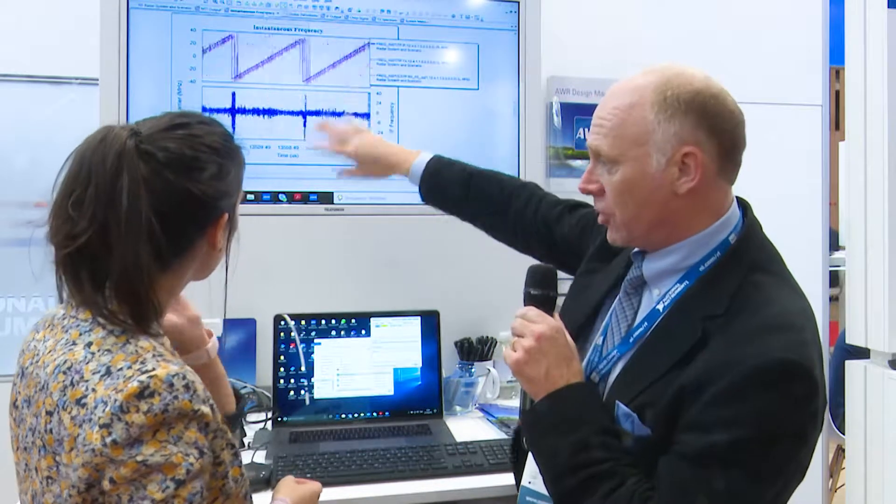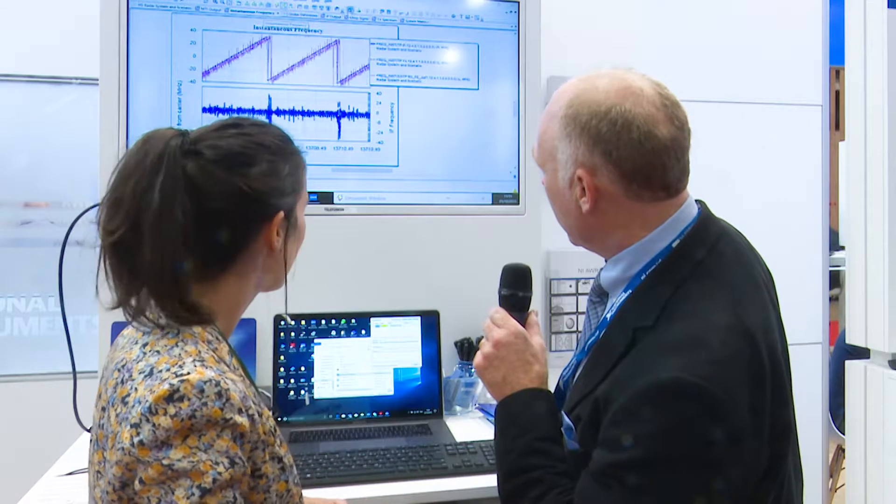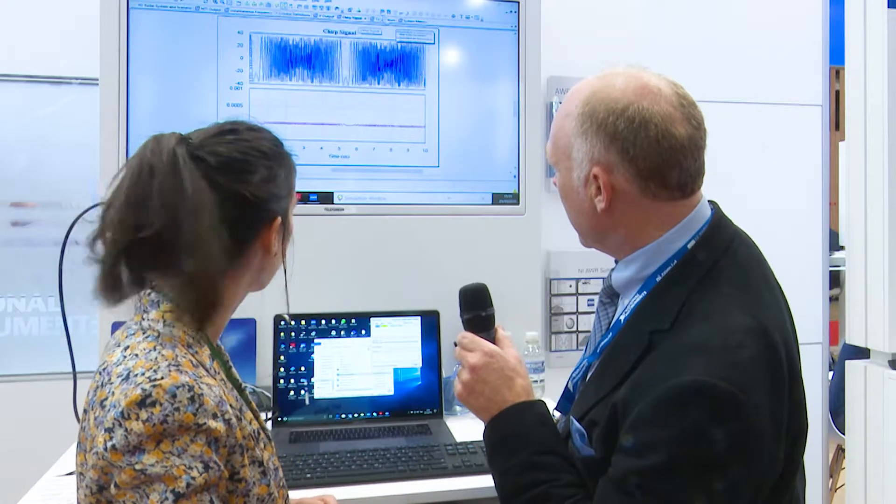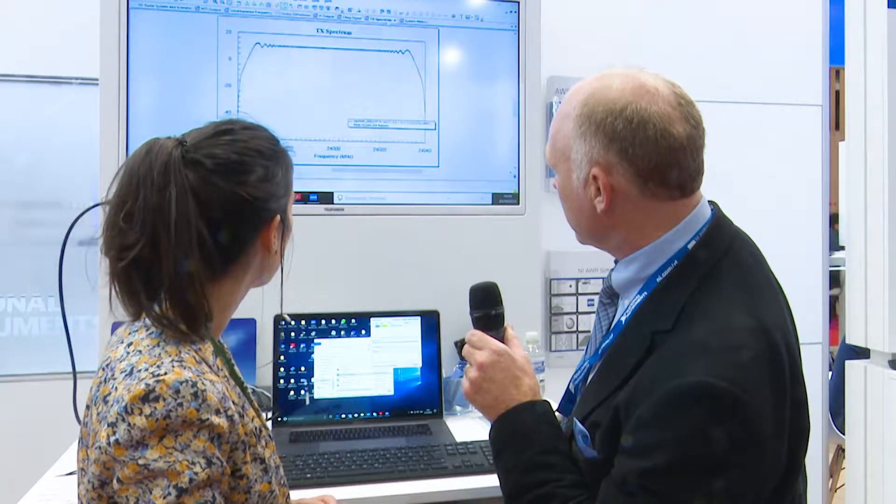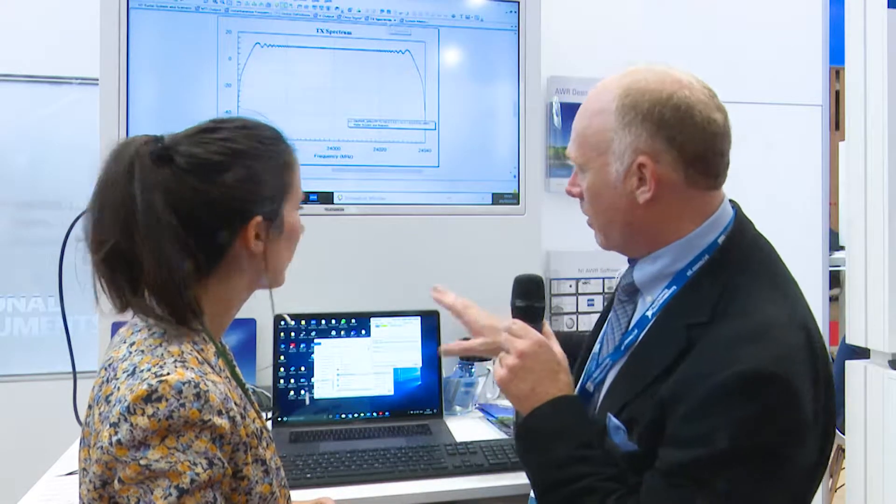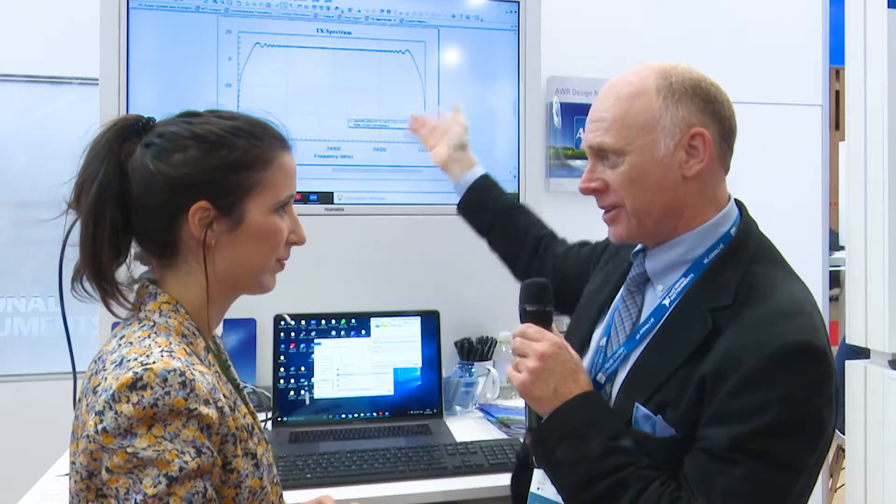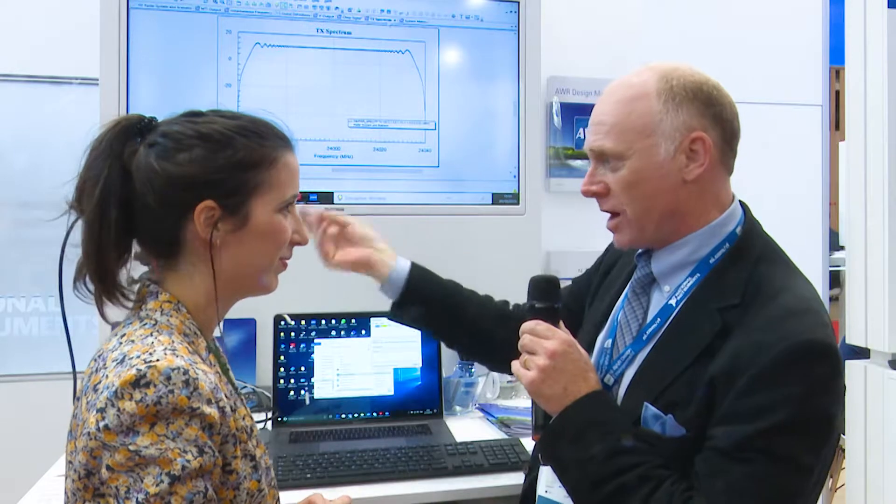Maybe I'll click through some of this. So this is the chirping of the FMCW, showing the instantaneous frequency. And I guess this is your chirp signal and your transmit spectrum. Now this is all in our virtual system simulator software, but you have hardware that this is emulating. So maybe you could walk us through that component that's over here.